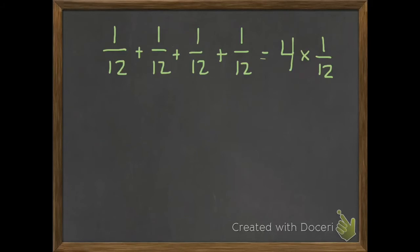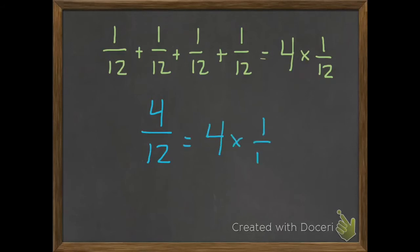On your assignment today, they're not going to have the 1 twelfths broken up like that — 1 twelfth plus 1 twelfth plus 1 twelfth plus 1 twelfth. They're going to just combine all those into 4 twelfths, and they still want you to make a multiplication equation. So 4 twelfths is still going to equal 4 times 1 twelfth. What we have in green is equivalent to what we have at the bottom — it's just that the 4 twelfths, instead of being broken apart, is put all together.